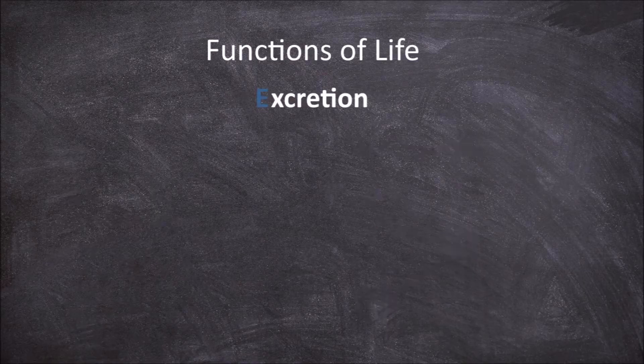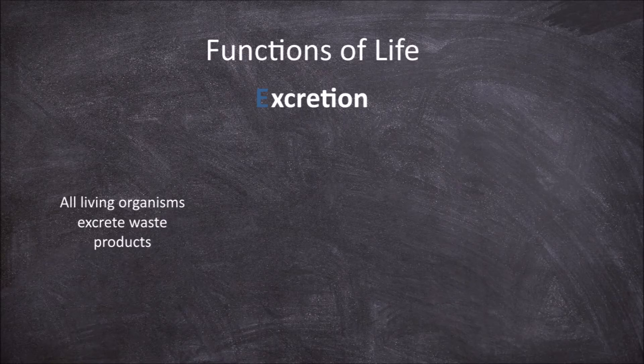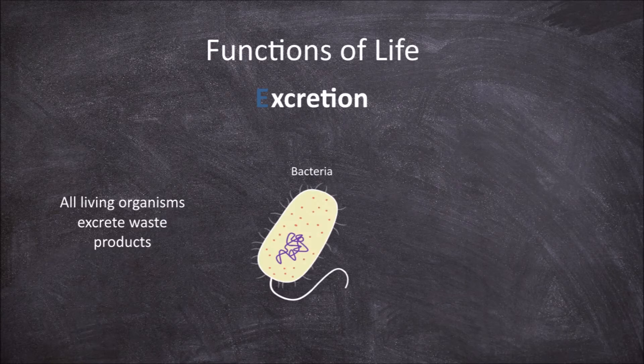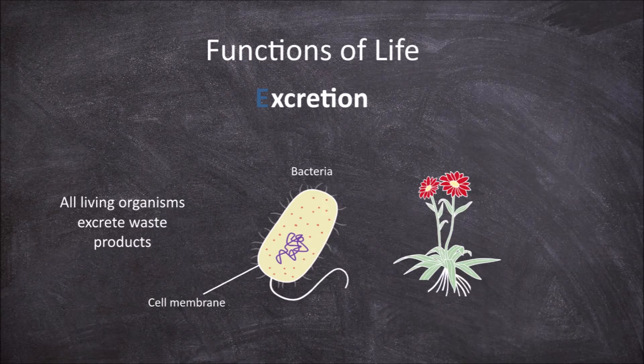Excretion is another essential functional characteristic of life. Living organisms excrete waste products. In unicellular organisms this occurs through the cell membrane; in plants it can be through the leaves and roots.